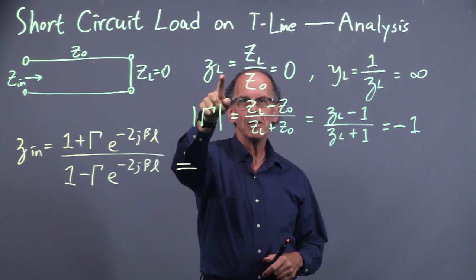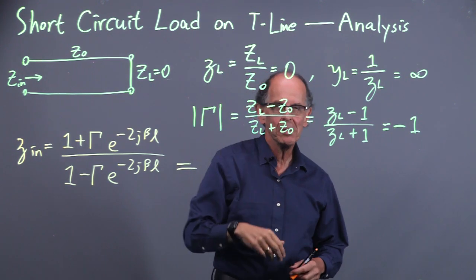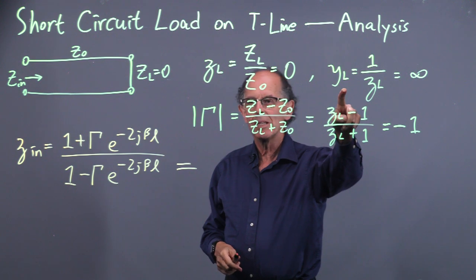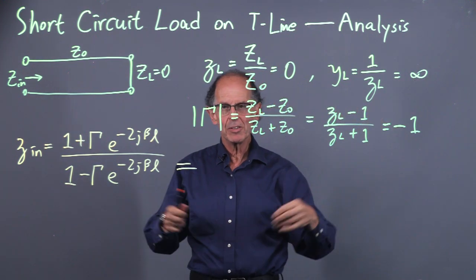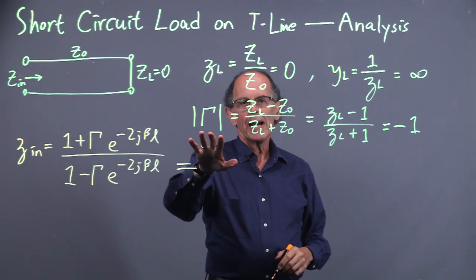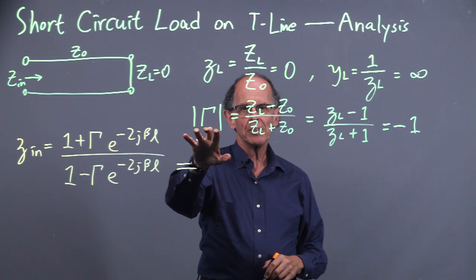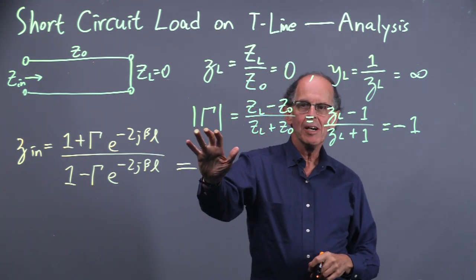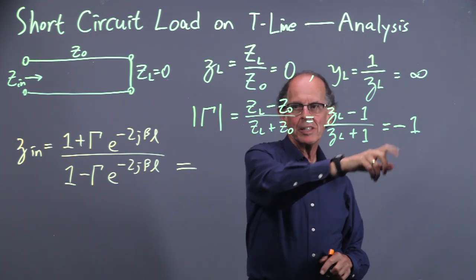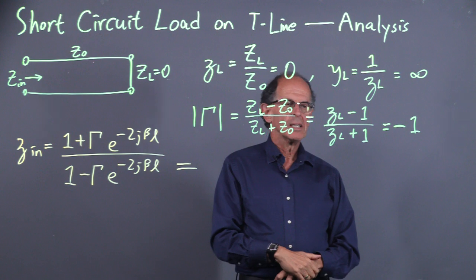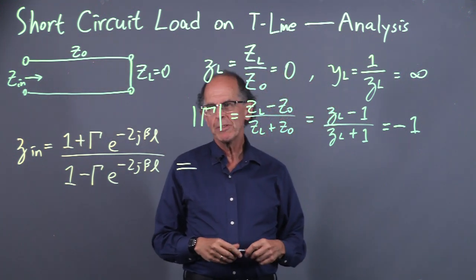Now we normalize the load. It's zero over Z naught, so it's zero. The normalized admittance is the reciprocal, so it's infinite. We want to look at gamma. It has no phase because both ZL and Z naught are real. The magnitude of gamma is minus one, and gamma itself is minus one.